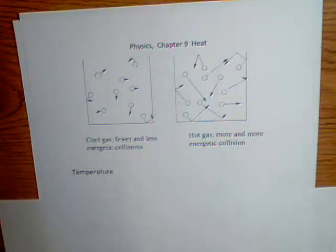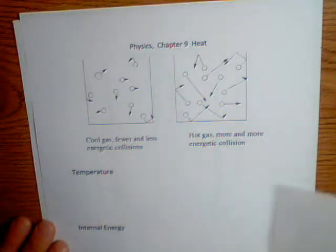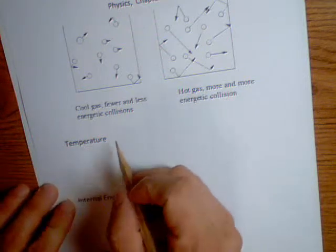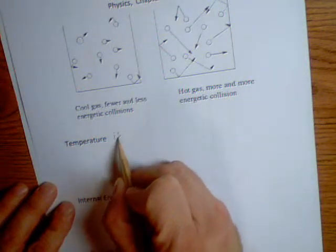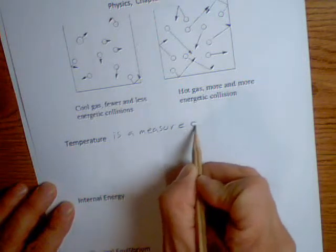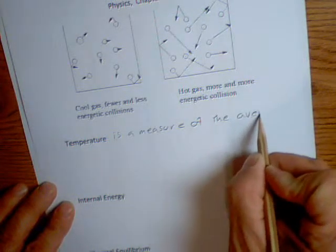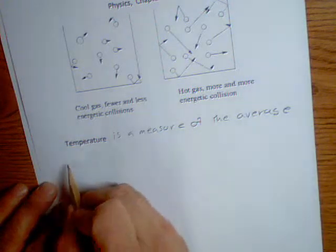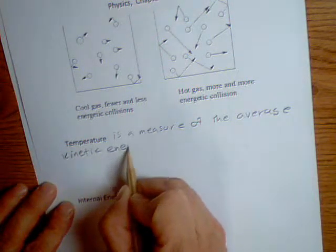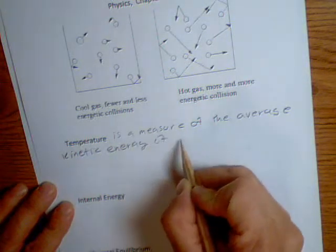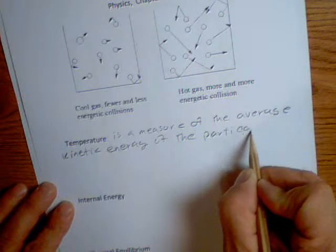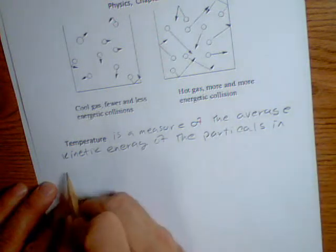Temperature, just by way of definition, let's start with the working definition of temperature. Temperature is a measure of the average kinetic energy of the particles in a substance.